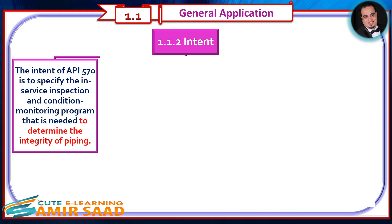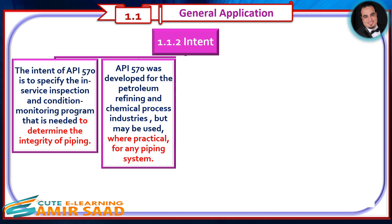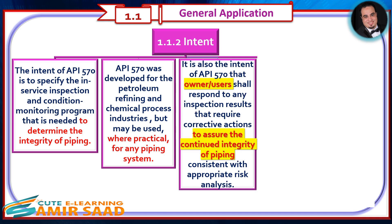The intent of API 570 is to specify the in-service inspection and condition monitoring program that is needed to determine the integrity of piping. API 570 was developed for the petroleum refining and chemical process industries, but may be used where practical for any piping system. It is also the intent of API 570 that owner-users shall respond to any inspection results that require corrective actions to assure the continued integrity of piping, consistent with appropriate risk analysis.